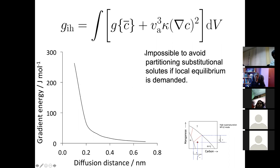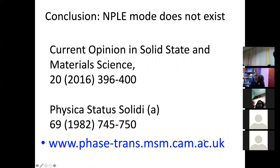I did calculations showing that if the diffusion distance is 0.2 nm, the gradient energy cost is about 100 J/mol; if it goes to 0.03 nm, the cost becomes so large that ferrite transformation becomes impossible. This concept of NPLE is therefore physically impossible — you cannot achieve local equilibrium when the gradient energy from such steep concentration gradients exceeds the driving force for transformation. The typical driving force for allotriomorphic ferrite formation is about 100 J/mol, so anything above that makes this mode of transformation physically impossible.